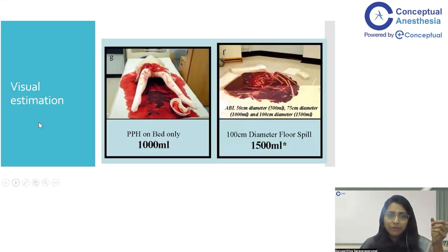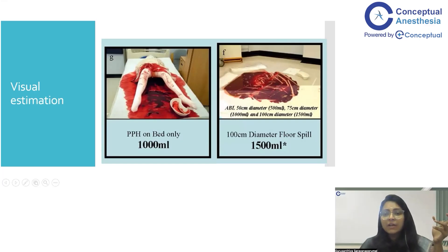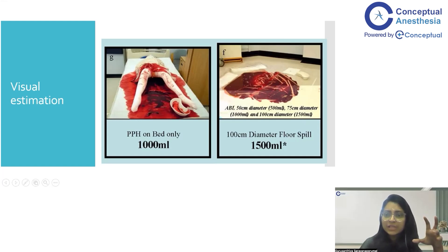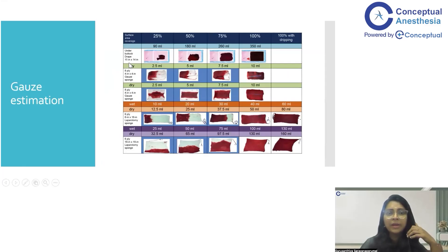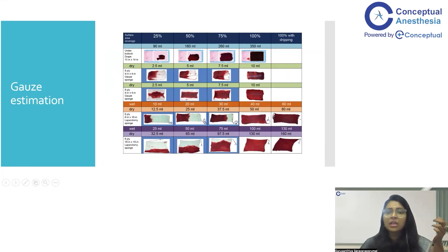For visual estimation in a BPH or floor pool scenario: blood confined to a 50 cm diameter pool is approximately 500 ml; 75 cm diameter is 1000 ml; and 1 meter diameter is 1500 ml. One should not forget the under-buttock drape used in caesarean section patients — if it is completely soaked, that accounts for approximately 350 ml of blood loss; if partially soaked, it is 180 ml.